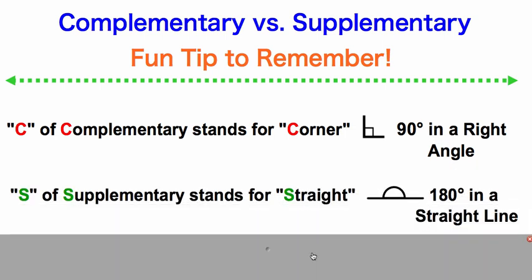For supplementary, we're going to think S, supplementary straight. The S of supplementary stands for straight. So supplementary angles are always going to add up to 180 degrees, a straight line.